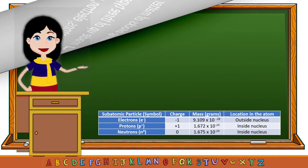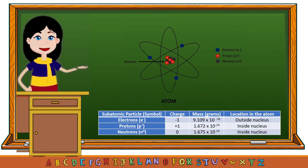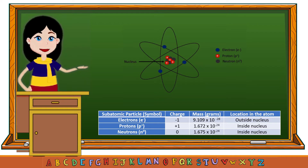Of the three subatomic particles of an atom, the electron is the lightest and extremely small. It is located outside the nucleus, and the symbol of an electron is e⁻, whose charge is negative one.